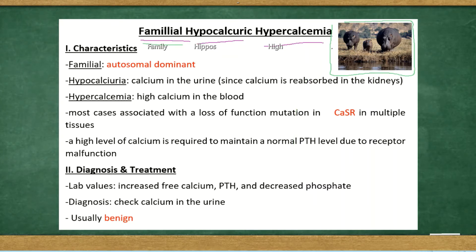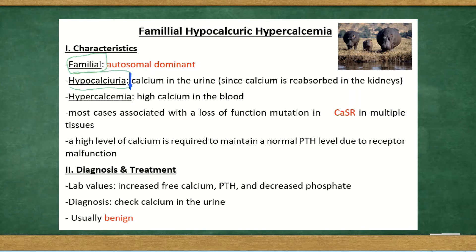You don't need that mnemonic to understand what's going on — it's actually a quite intuitive disorder. The name gives it away: familial, because it's inherited in an autosomal dominant fashion; hypocalciuria, because hypo means less, and calciuria means calcium in the urine, so there's less calcium in the urine than usual; and hypercalcemia, because there's more calcium in the blood.